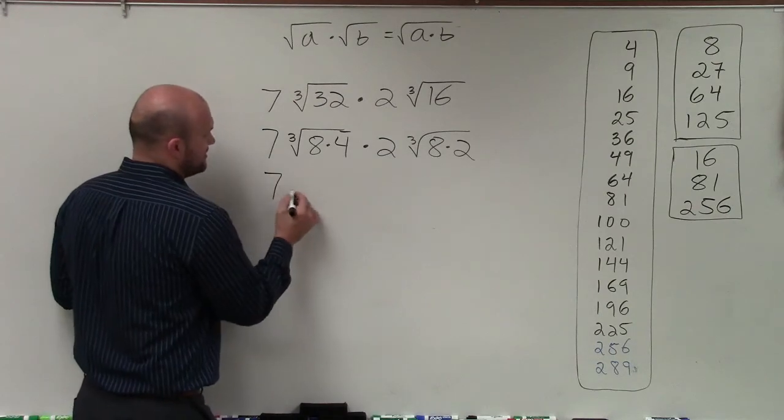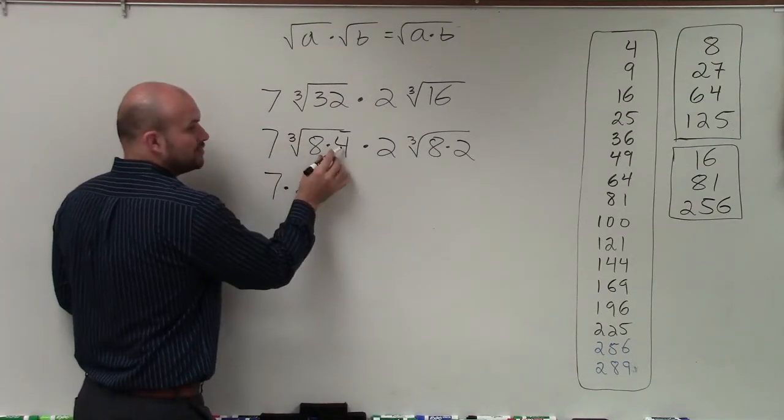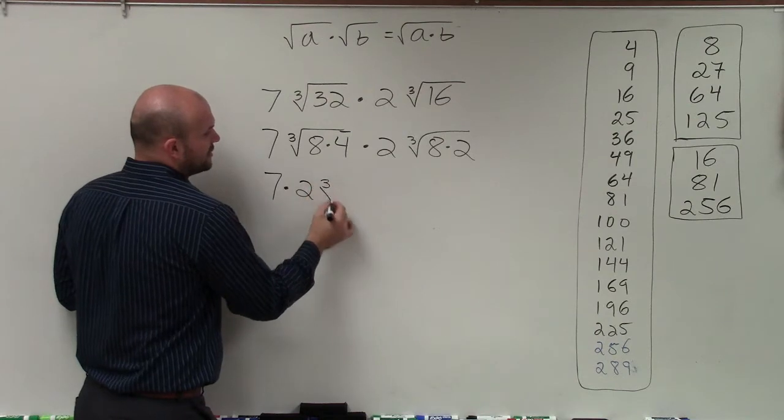So therefore, I can rewrite this as 7 times the cube root of 8 is 2. I don't know the cube root of 4, so I have to leave that under its radicand.